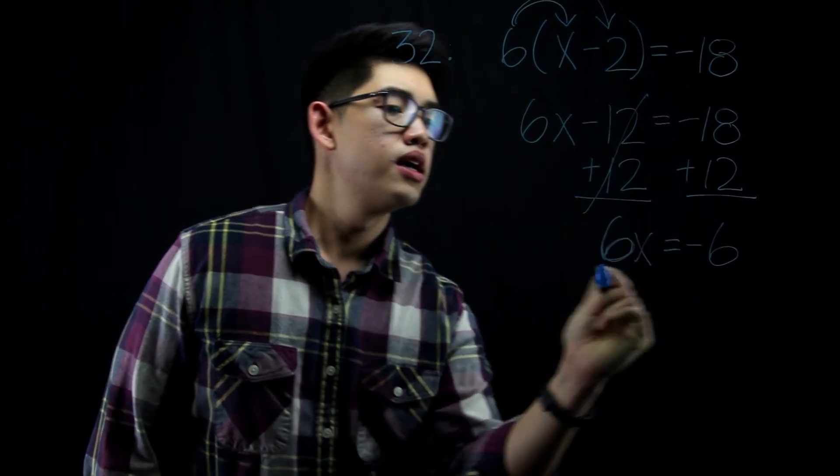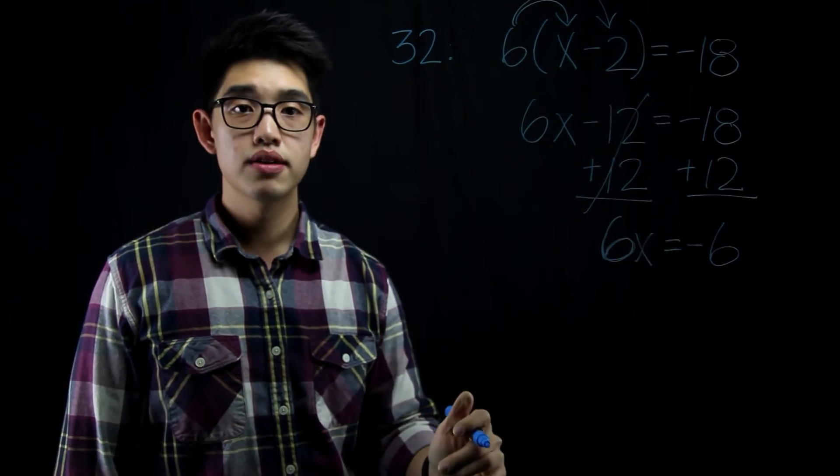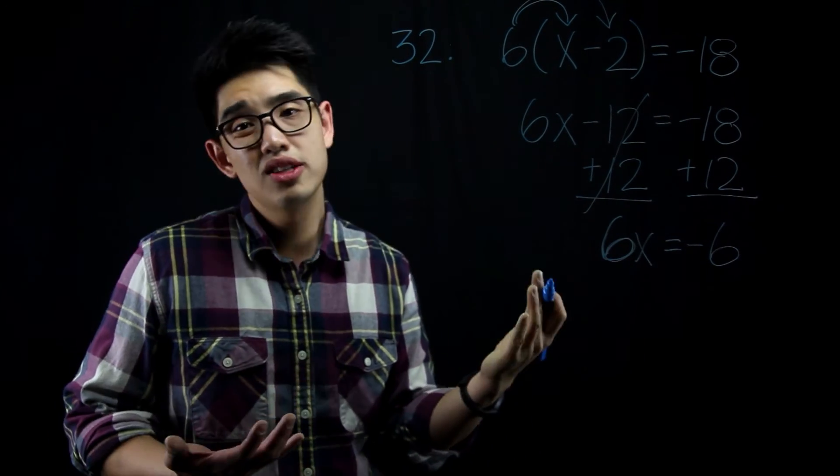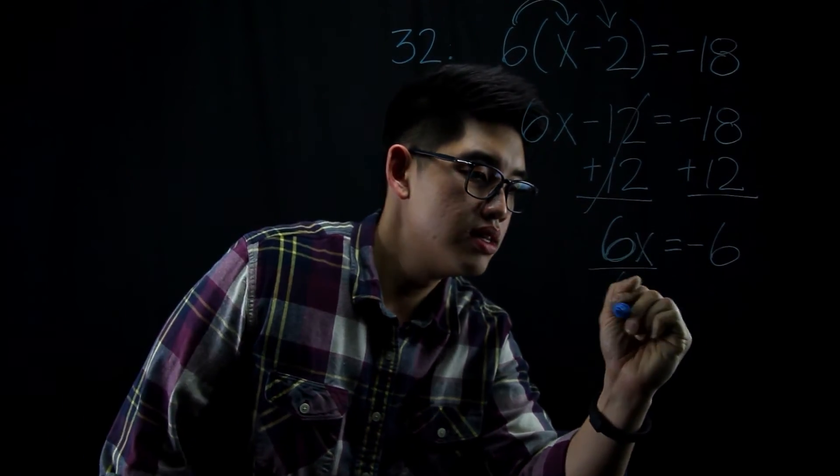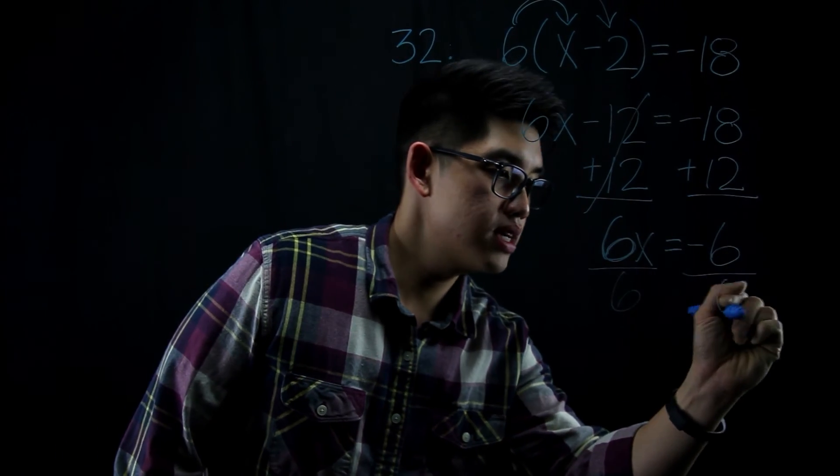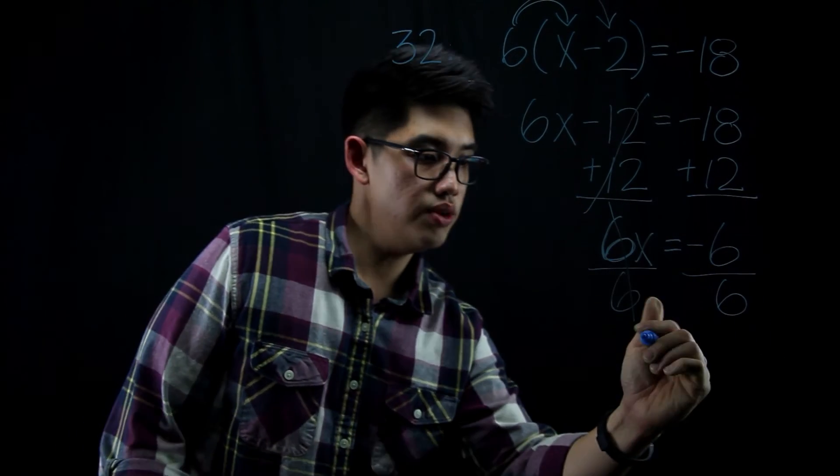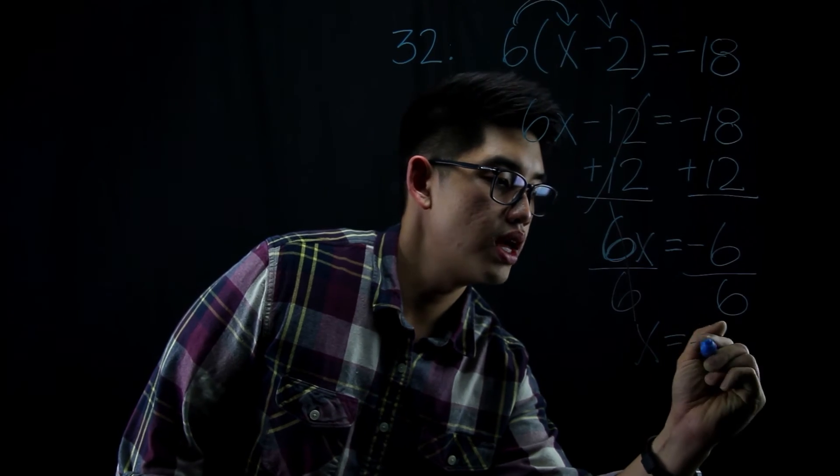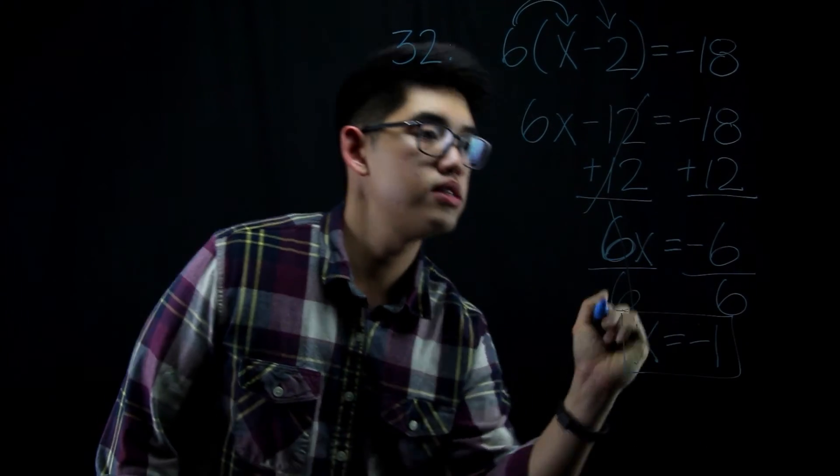6 times a number equals negative 6. If you guys can do it in your head, it's just negative 1. But I'm going to divide by 6 here. I'm going to divide by 6 here because that's the inverse operation. And then x will equal negative 1. That is your answer.